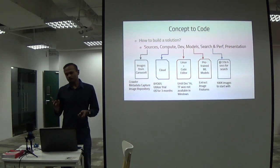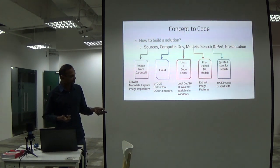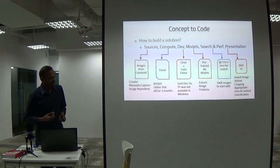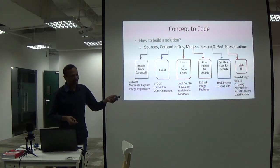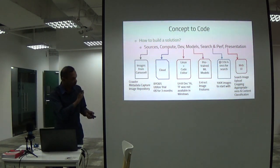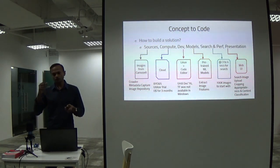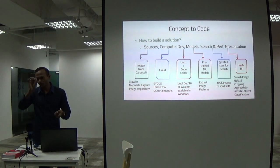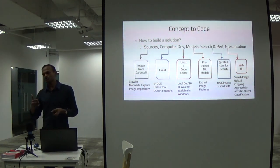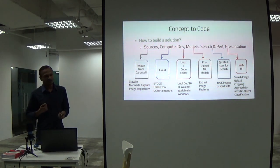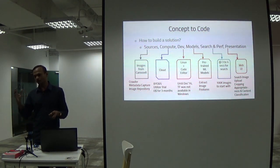I was looking at three to four seconds search response for 100K images. For the web UI, I wanted to learn Python Flask. It should allow you to upload an image similar to Google, allow cropping — because whenever you take a photo it's going to be huge and you may want to focus on a particular area. It should also check for appropriateness: if you're building a commercial service, someone might upload inappropriate content, so it should flag whether content is appropriate or inappropriate.